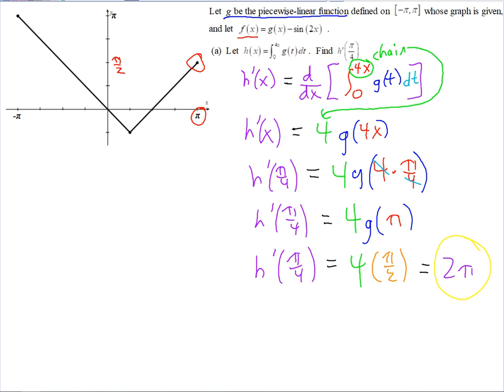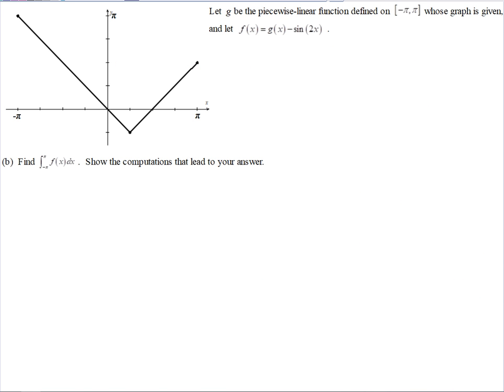That looks like part (b). On part (b), we have the integral from -π to π of f(x)dx. We want to evaluate it and show the computations that lead to your answer. So this is f(x) right here. And notice it's two functions: g(x) minus sine of 2x. So that's what we're going to integrate.